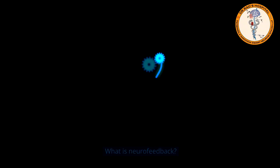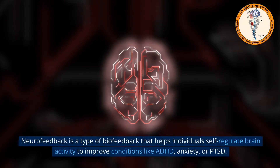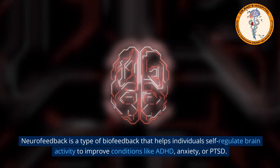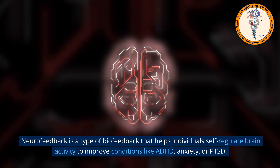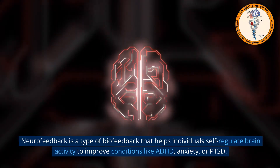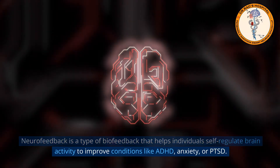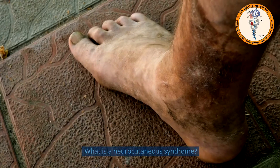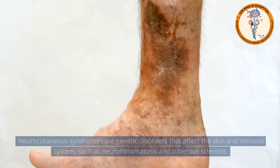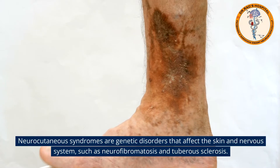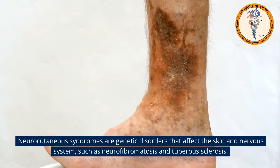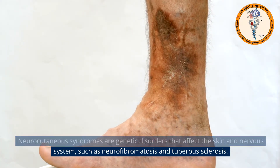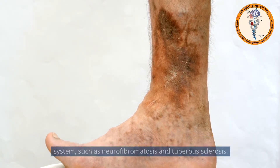What is neurofeedback? Neurofeedback is a type of biofeedback that helps individuals self-regulate brain activity to improve conditions like ADHD, anxiety, or PTSD. What is a neurocutaneous syndrome? Neurocutaneous syndromes are genetic disorders that affect the skin and nervous system, such as neurofibromatosis and tuberous sclerosis.